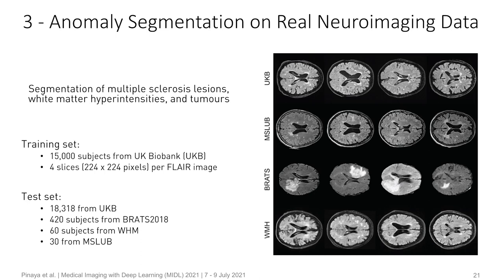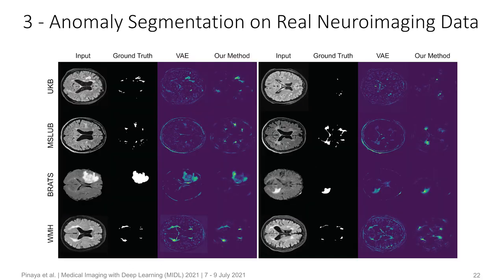Finally, we measure the performance of our method on real image data. We train our models on 60,000 images from 15,000 different subjects from the UK Biobank. In this experiment, we use FLAIR images where each slice has 224×224 pixels. To evaluate performance, we test on four different datasets with subjects with multiple sclerosis lesions, white matter hyperintensities, and tumors. By analyzing the residual images, we can see that our method has better segmentation performance, especially in reducing the number of false positive anomalies.